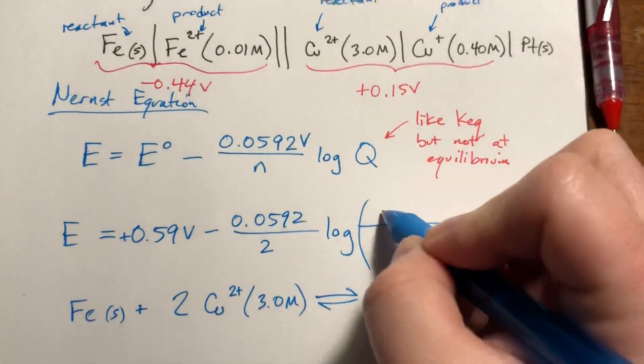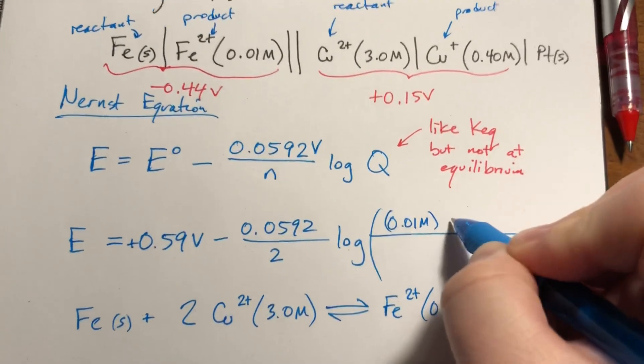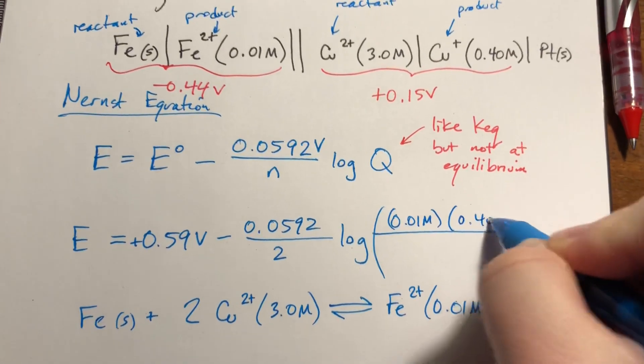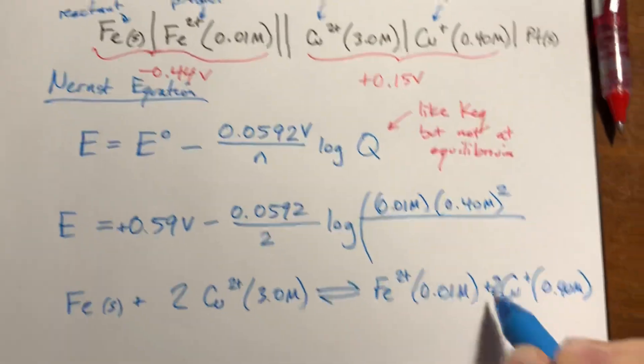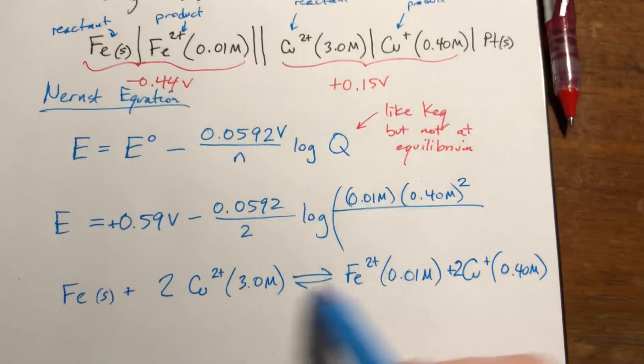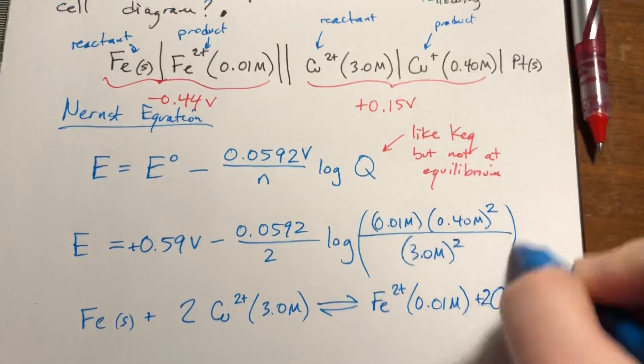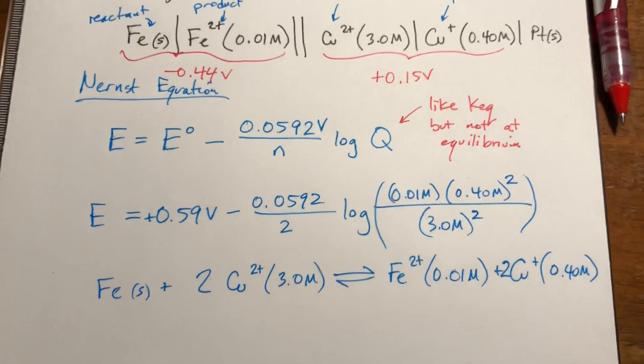So the products, this is going to be 0.01 molar, this is going to be times 0.40 molar, and that's going to be squared because we had to double the copper reaction, and then divide it by 3.0 molar squared. Okay, so let's plug everything in and see what we get.